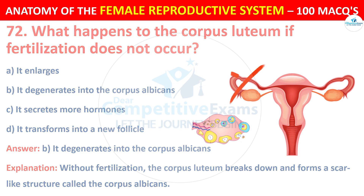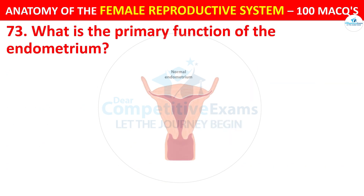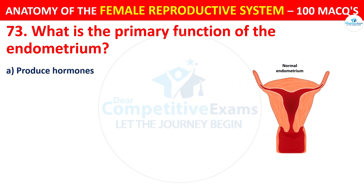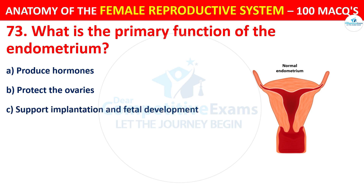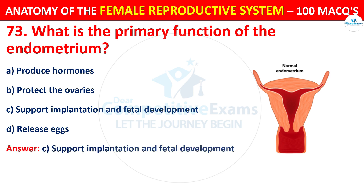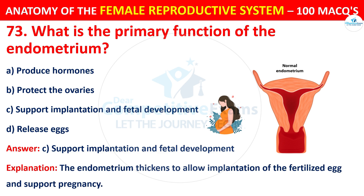Question number 73. What is the primary function of the endometrium? Options: produce hormones, protect the ovaries, support implantation and fetal development, or release eggs. The correct answer is C — support implantation and fetal development. The endometrium thickens to allow implantation of the fertilized egg and support pregnancy.